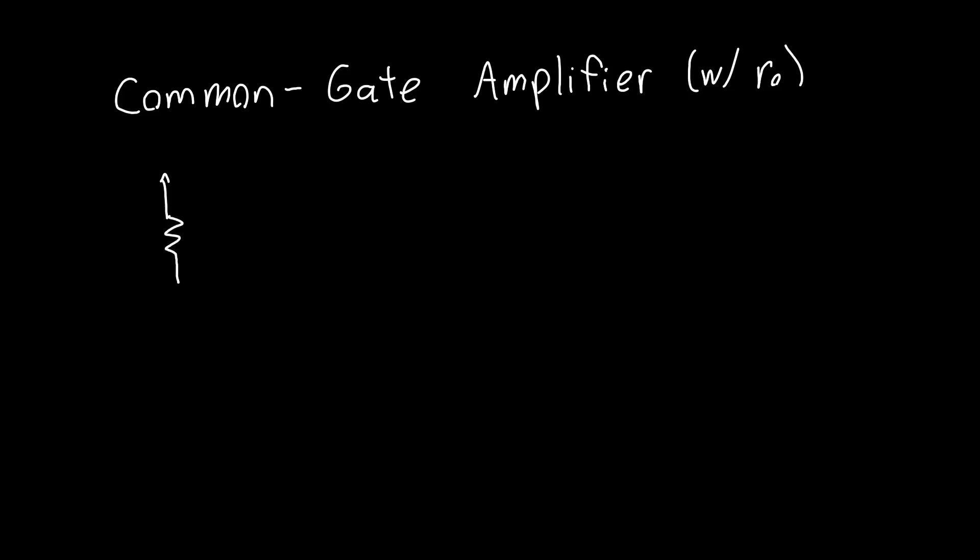Remember we said the common gate amplifier is just this amplifier where the gate is grounded or common, the output is taken at the drain, and the input, weirdly enough, is applied to the source.